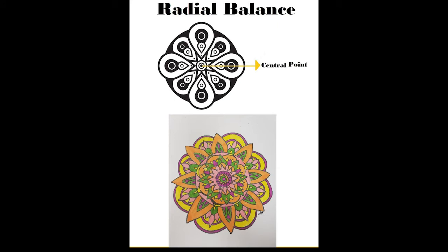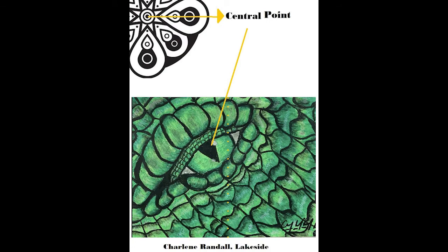Now let's look at some examples of radial balance. We achieve radial balance when all of our elements in our artwork radiate from a central point. If the focus of the artwork is at the center of the artwork, then it's also considered to have symmetrical balance. That's the case with my former student Sam Miller's Mandala here — everything's coming from the center of the artwork, so it's radial and symmetrical. It's not always the case, as you can see here in Charlene Randall's dragon eye — the focus is not in the center of the artwork, however there is still a center point in the eye where it looks like everything is radiating from it.